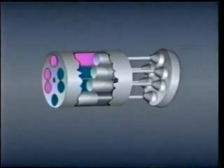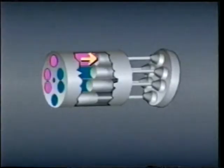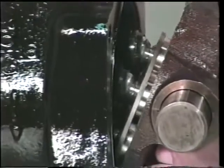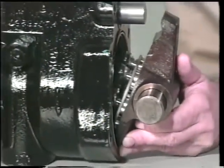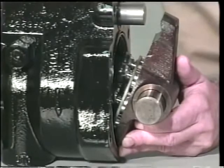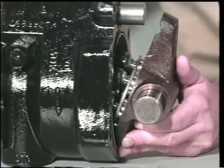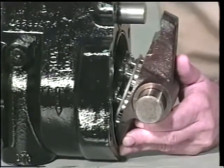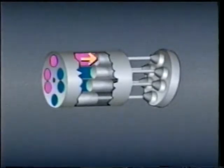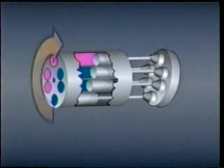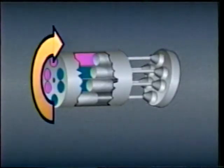In a piston motor, fluid pressure pushes against the pistons. The piston shoes are forced to slide up and around the swash plate, turning the cylinder barrel as they move. After each piston passes the top of the swash plate, it starts back down, forcing fluid out of the piston bore and through the outlet port as the shoe and piston ride back down the swash plate. Increasing the pressure forces the piston shoes more firmly against the swash plate, increasing the torque applied to the cylinder barrel and to the shaft.